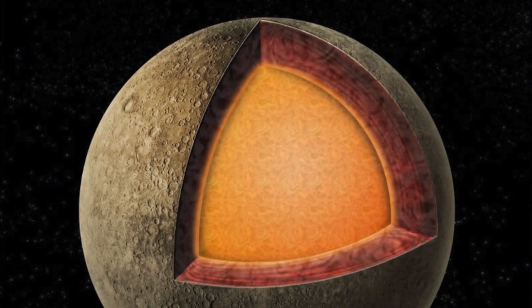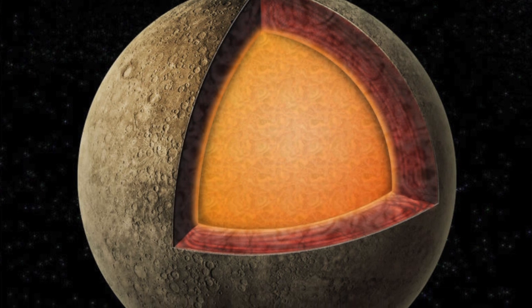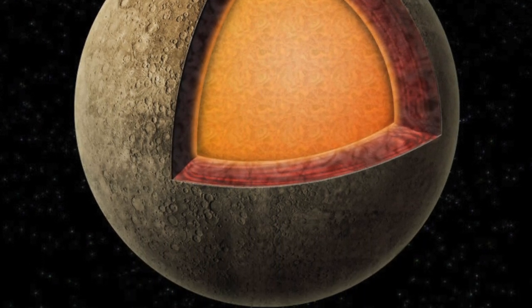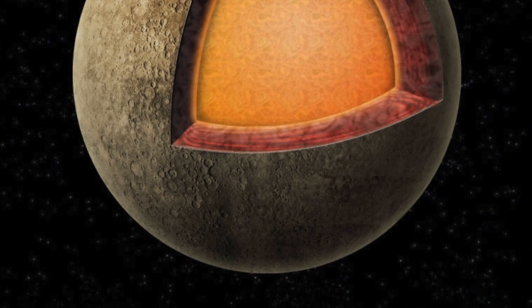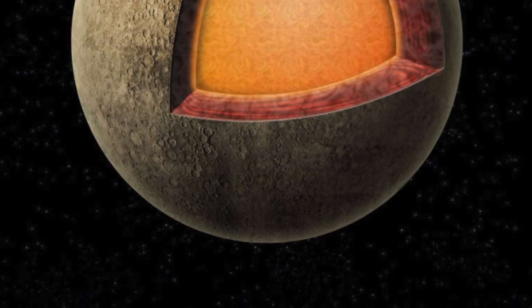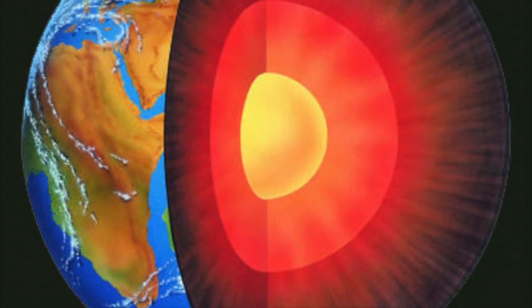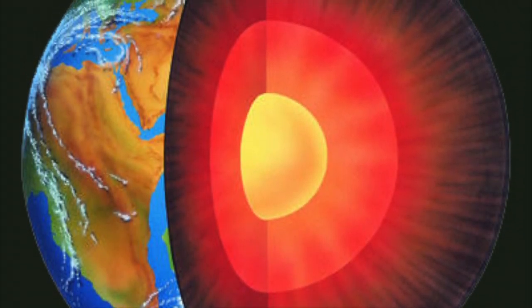At the centre of Mercury is the core. The core is a ball of liquid iron and other metals, measuring approximately 3600km across. This is extremely large for a core and takes up about 42% of Mercury's volume. Compare this to Earth and our core only takes up about 17% of our volume.